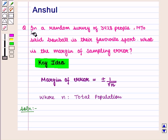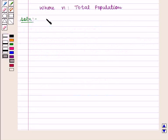Here in the question, we are given that in a random survey of 3428 people, 14% said baseball is their favorite sport. So here we are given the population. That is, the total population, which is denoted by n, is given as 3428.